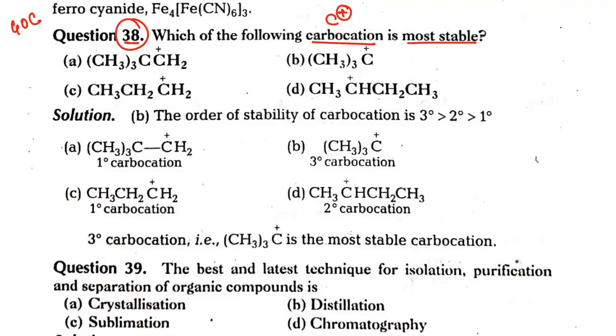Now, carbon can be in any position within the molecule, so on the basis of that we have three types of carbocation: primary, secondary, and tertiary.